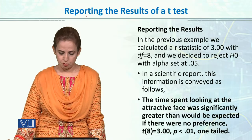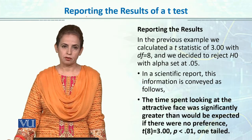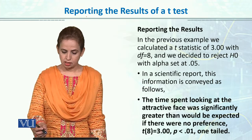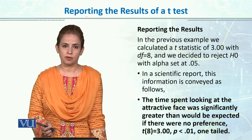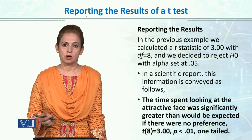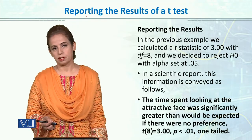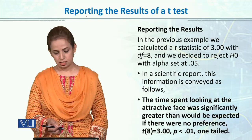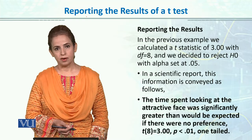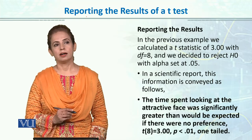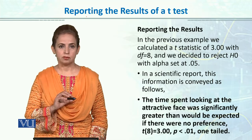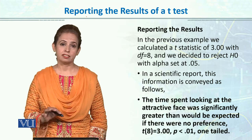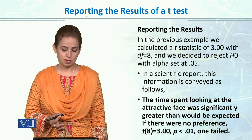In the previous example, the t-value calculated was 3, its degrees of freedom was 8, and its alpha level was 0.05. For reporting, three things are reported: degrees of freedom, the calculated t-value, and the alpha value. Then we verbally state whether the null hypothesis was rejected or failed to be rejected, and what that means.